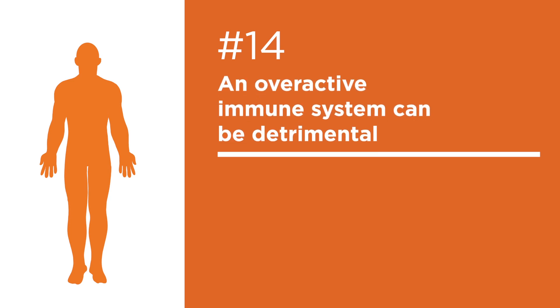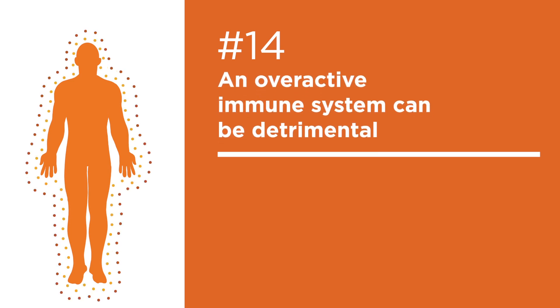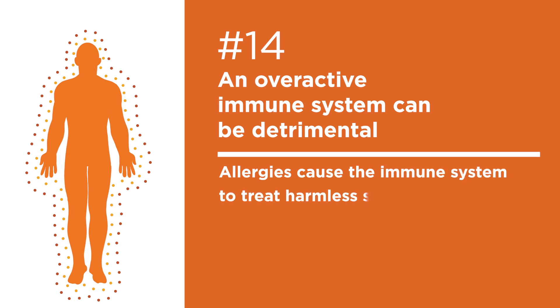Number fourteen: overactive immune system. An overactive immune system can react to certain foods as if they were poisons. This phenomenon is also known as allergies and can be triggered by otherwise harmless substances like dust and pollen.